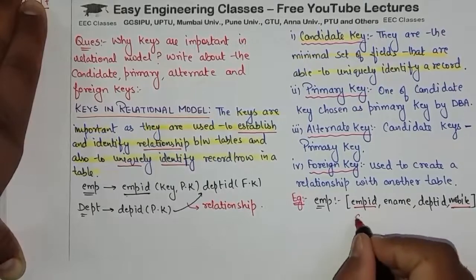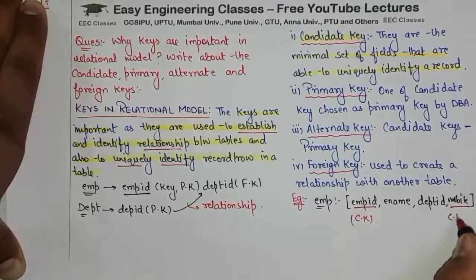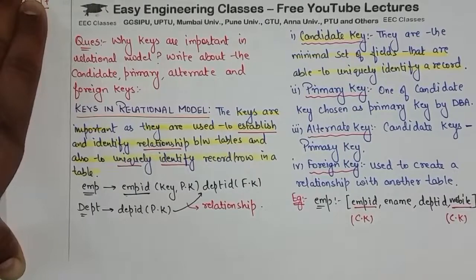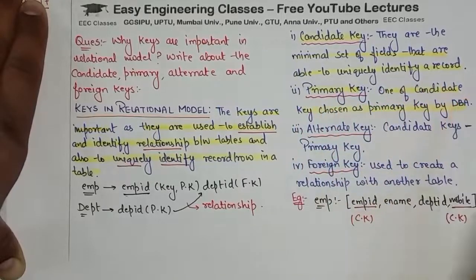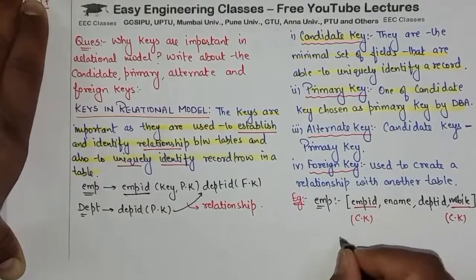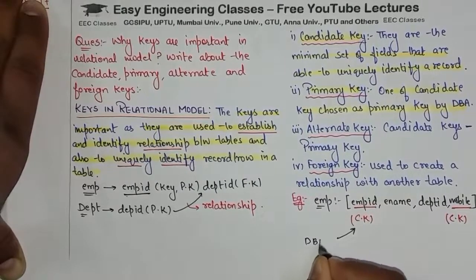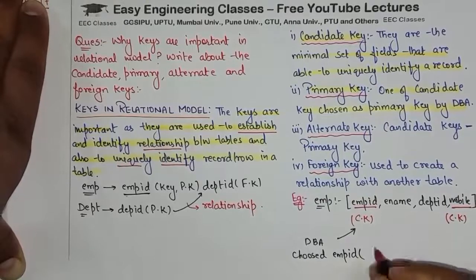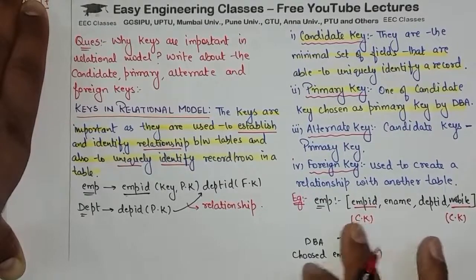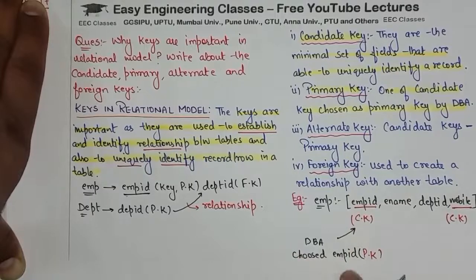So these are the candidate keys. Then primary key — one of the candidate keys chosen as primary key by the DBA. So that means if DBA has chosen the employee ID, then employee ID is the primary key. In the two candidate keys, DBA has chosen employee ID, so employee ID is primary key.